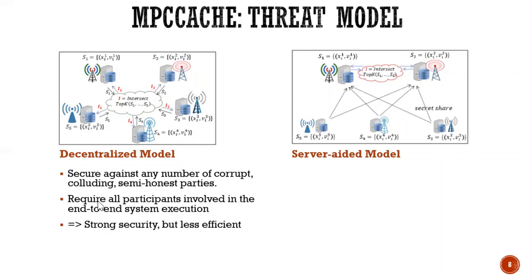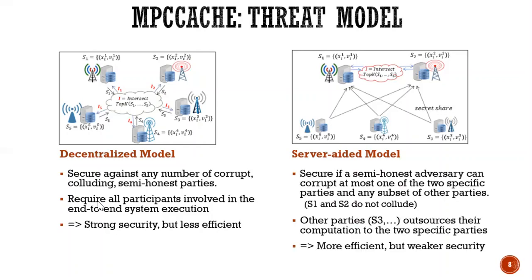And in server-aided model, it executes as long as we have two specific parties. These parties, they don't collude. So for example, here we have P1 and P2 do not collude each other. And other parties can be considered like outsource their computation to the two specific parties. So therefore, this model is more efficient, but with weaker security.